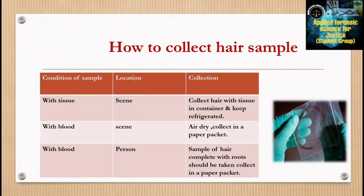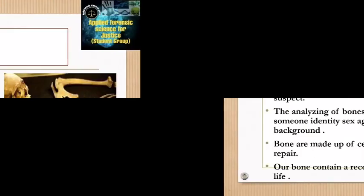How to collect hair samples: First, for hair with tissue from the scene, collect hair with tissue in a container and keep refrigerated. Second, for hair with blood from the scene, air dry, collect in a paper packet. Third, for hair with blood from a person, a sample of hair complete with root should be taken and collected in a paper packet.